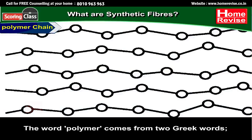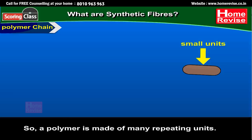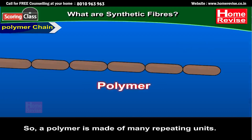The word polymer comes from two Greek words: poly meaning many and mer meaning part or unit. So a polymer is made of many repeating units.